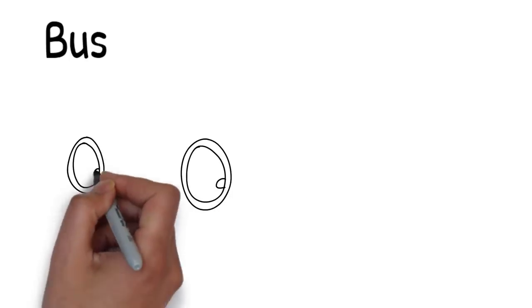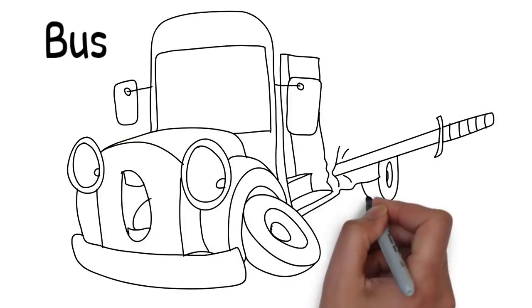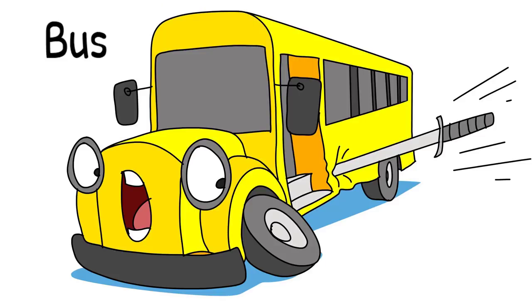The hamburger throws the sword through the air but it misses the flower and flies into the side of a school bus. Thankfully no children were in the bus at the time but the bus is still pretty grumpy.